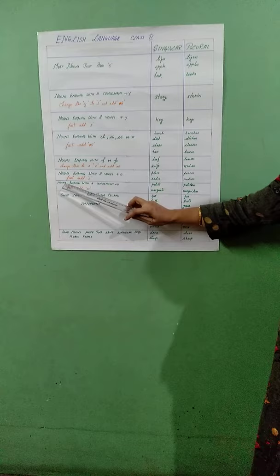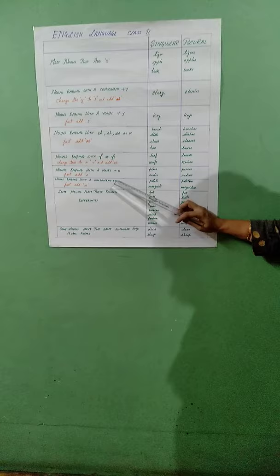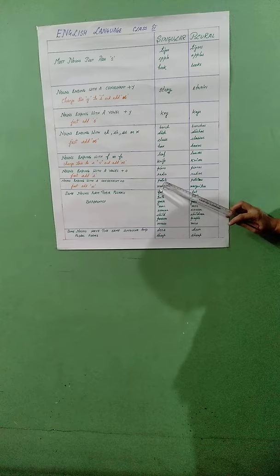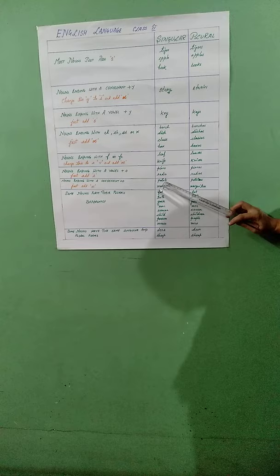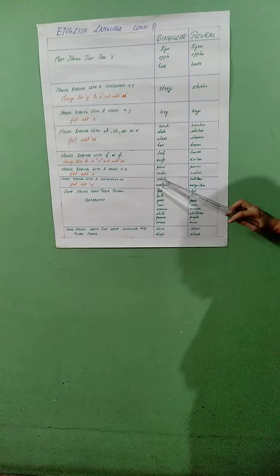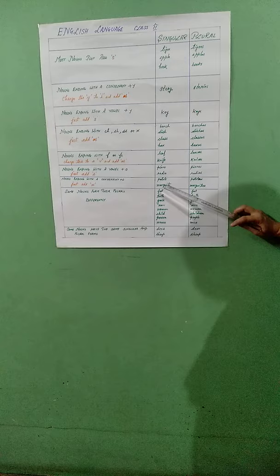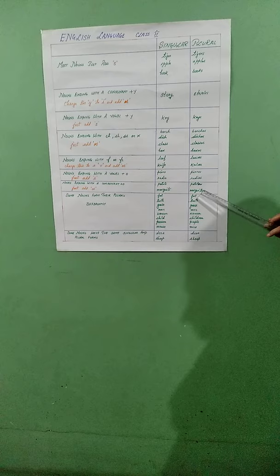The next rule: nouns ending with a consonant and then having an O at the end — just add ES to it. For example, potato — the spelling is P-O-T-A-T-O. T is a consonant and O is at the end, so potato gets changed into potatoes by adding ES. Similarly, mosquito, ending in O and having T as a consonant, becomes mosquitoes by adding ES.